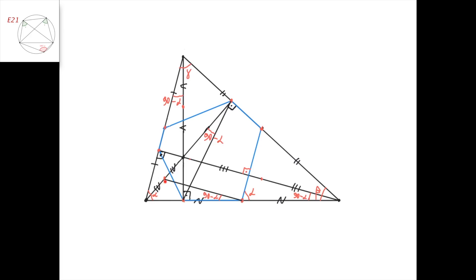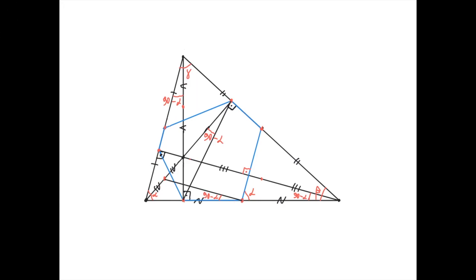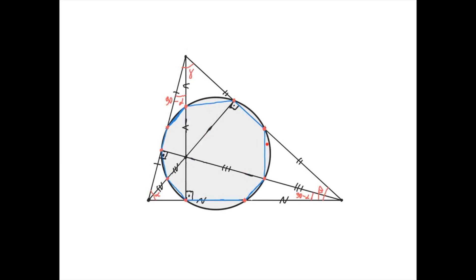And therefore, this point lies on the circumcircle of this triangle, which is exactly the Euler circle that passes through these six points. Therefore, this point lies on the Euler circle. By symmetry of argument, we could have shown in the same way that this point and this point also lie on this circle. And now we know that these nine points all lie on one circle, the nine-point circle for this triangle.